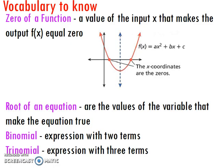Vocabulary to know. The zero of a function is a value of the input x that makes the output f(x) equal zero. So when you input a value in for x, you get an output of zero, meaning it's going to lie on the x-axis.